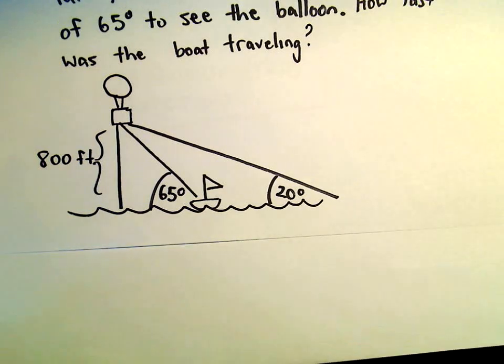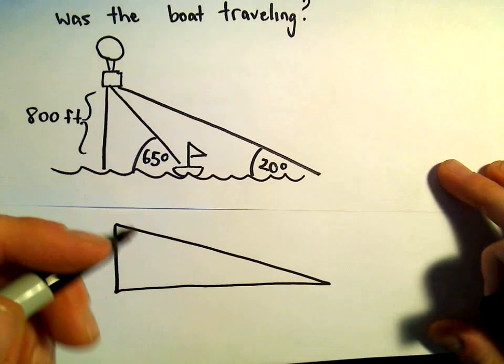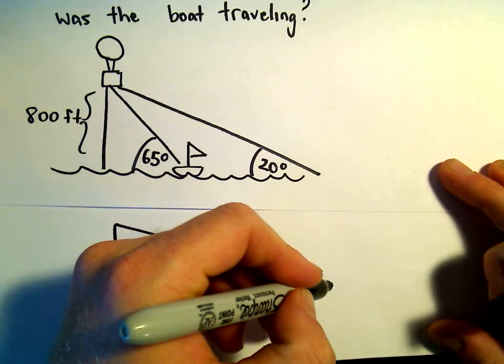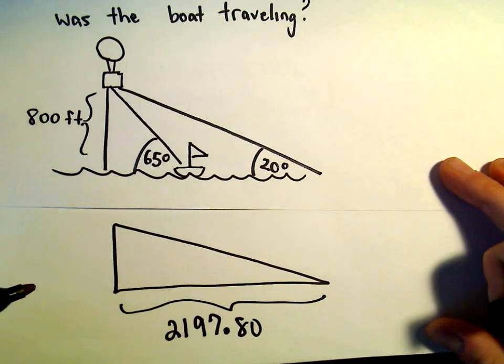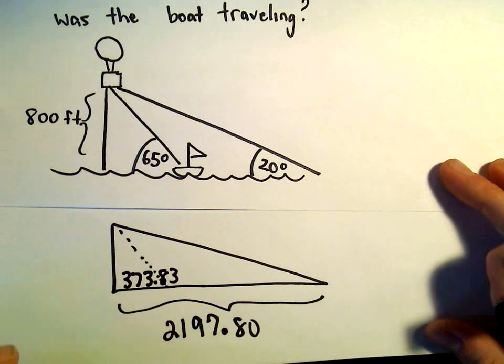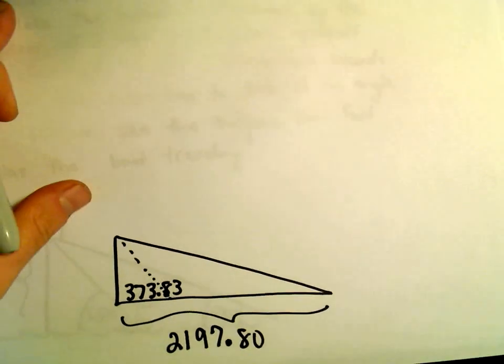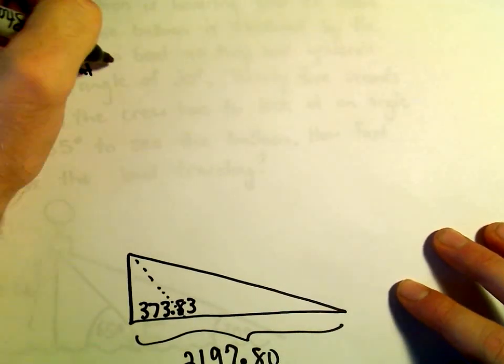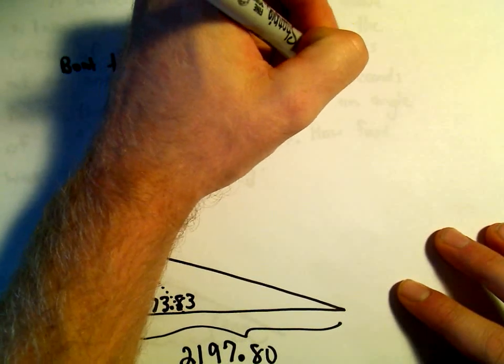If we go back to our original picture here, we've now figured out that our total distance, this original total distance between the boat and this horizontal distance between the boat and the balloon, we figured out that that entire distance was 2,197.80, but we figured out this little distance, sort of the shorter distance, was 373.83 feet. So we're just going to simply figure out the distance that the boat traveled by using those two values. The distance that the boat traveled would simply be the difference between these two.